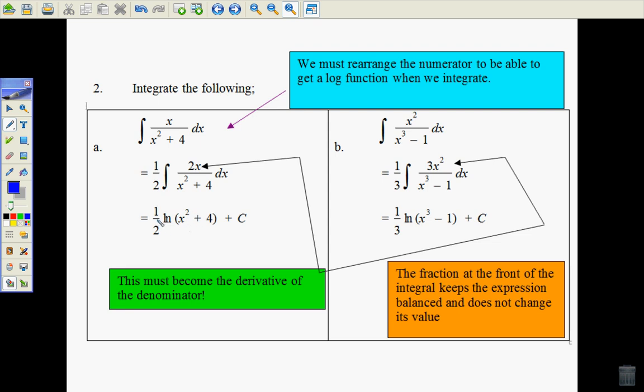So if we derive that one, half of that would give us back to x over x squared plus 4. And that's what we're doing with these ones.